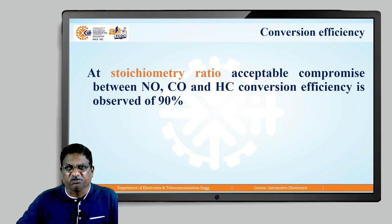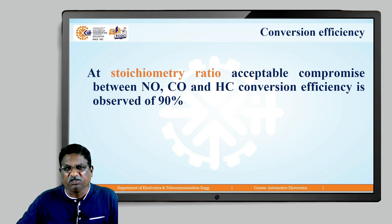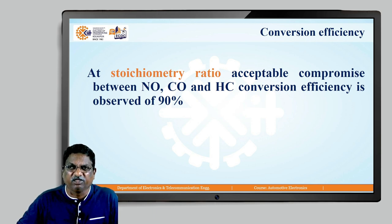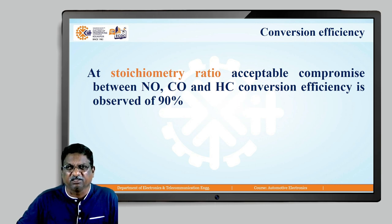At the stoichiometric ratio — which we have already seen in the previous lecture — the optimum ratio of air and fuel is the stoichiometric ratio. An acceptable compromise between nitrogen oxide, carbon monoxide, and hydrocarbon conversion efficiency is observed at 90 percent. At this 90 percent conversion efficiency, the amounts of NOx, CO, and HC are less.